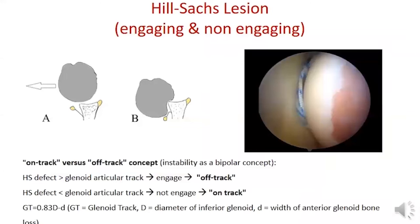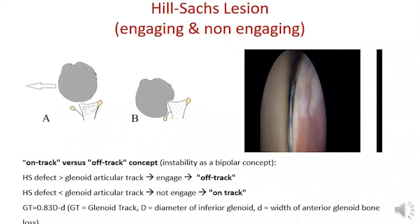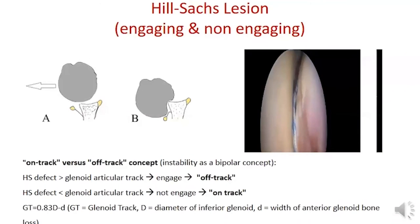The Hill-Sachs lesion is a compression fracture of the posterolateral aspect of the humeral head resulting from impaction with the denser antero-inferior glenoid during anterior shoulder dislocation. The lesion is defined as engaging when the defect engages on the anterior glenoid rim during abduction and external rotation. The new concept of on-track versus off-track considers instability as a bipolar concept: if the Hill-Sachs defect is larger than the glenoid articular tract, it will engage and is called off-track; if smaller, it will not engage and is called on-track.